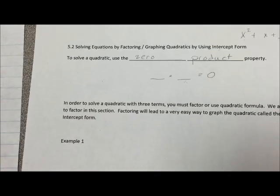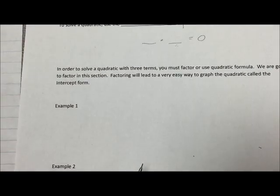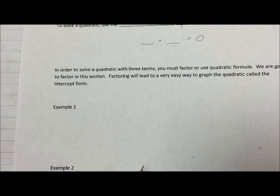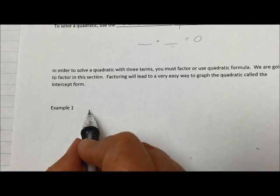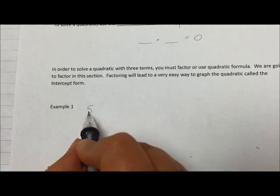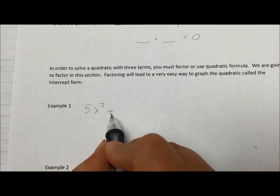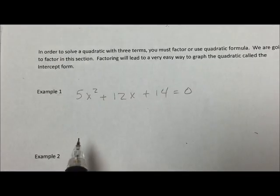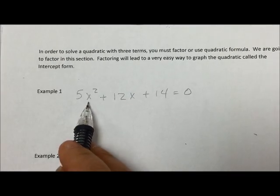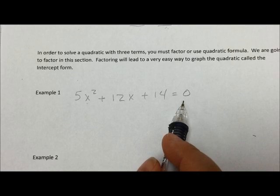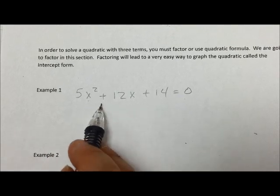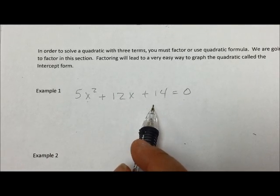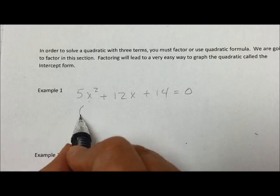So that's helpful when we work through example one of solving the equation. The first example I'm going to give you is 5x squared plus 12x plus 14 equals zero. We want to try to figure out what two numbers could I put in place of x that will give me zero, and the only way to solve this is by factoring or the quadratic formula.